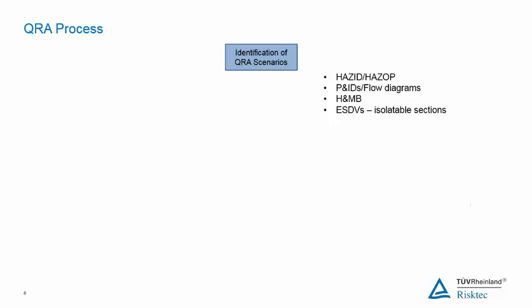The plant is divided into sections, with the boundaries between sections usually being isolation or emergency shutdown valves, or changes in fluid state such as gas and liquid. Small, medium, or large releases would occur from each section. The potential consequences from the identified release scenarios are determined and brought forward for modelling.